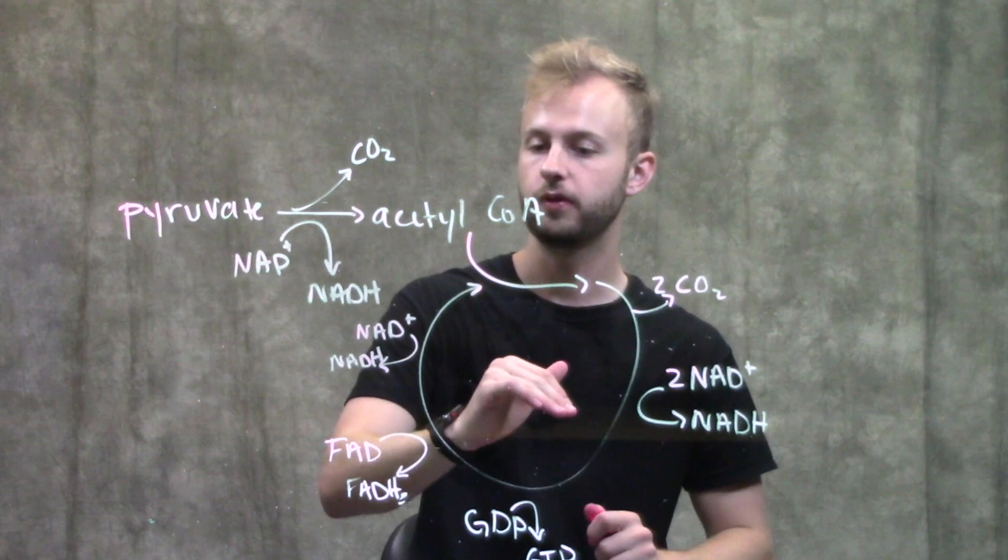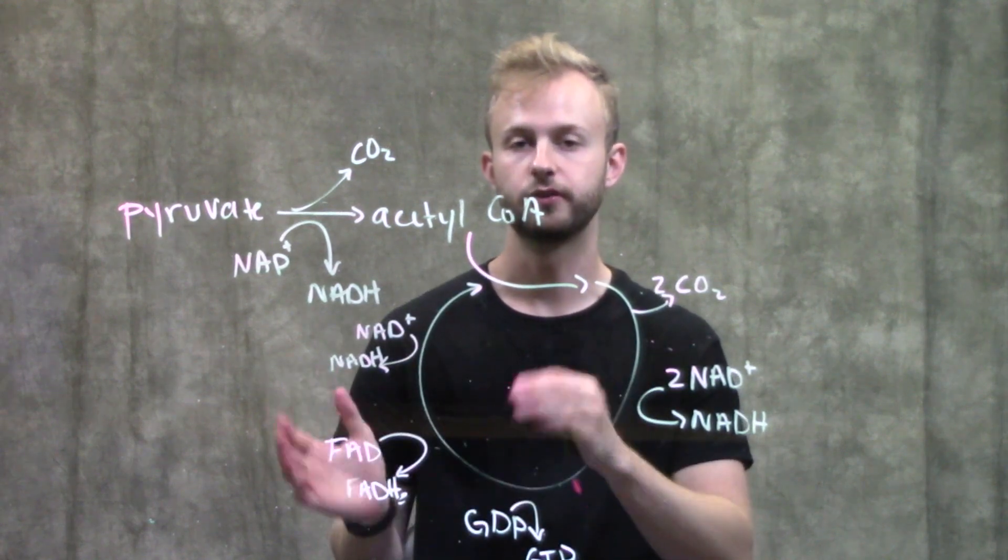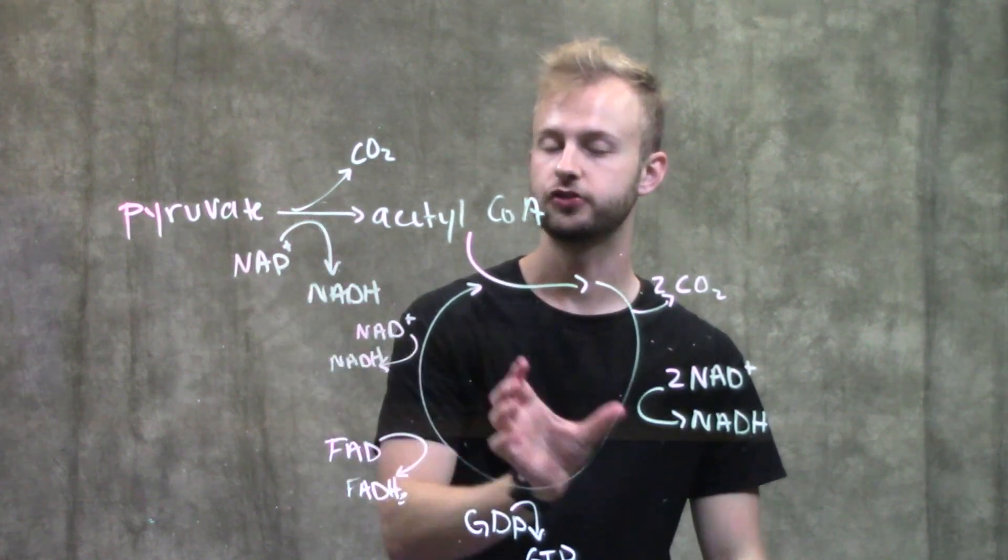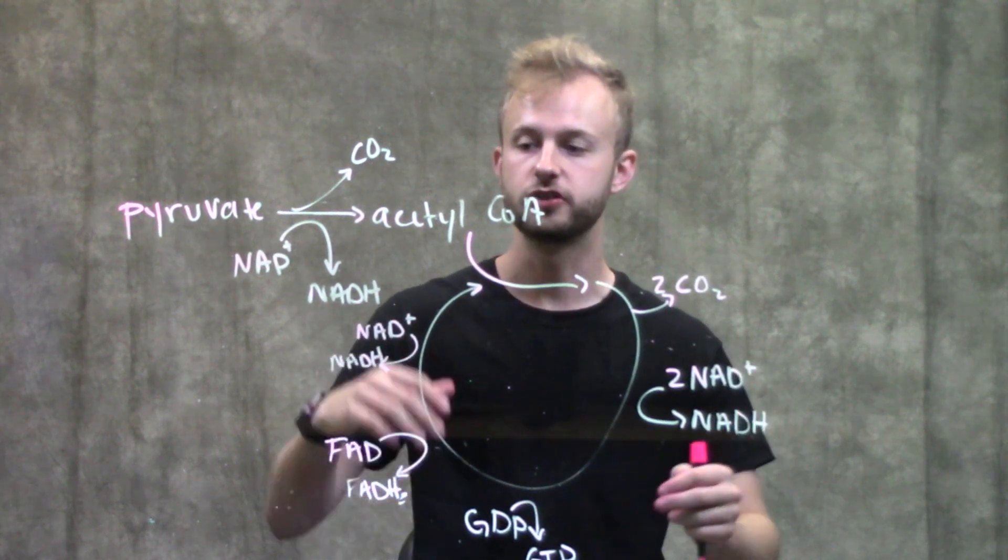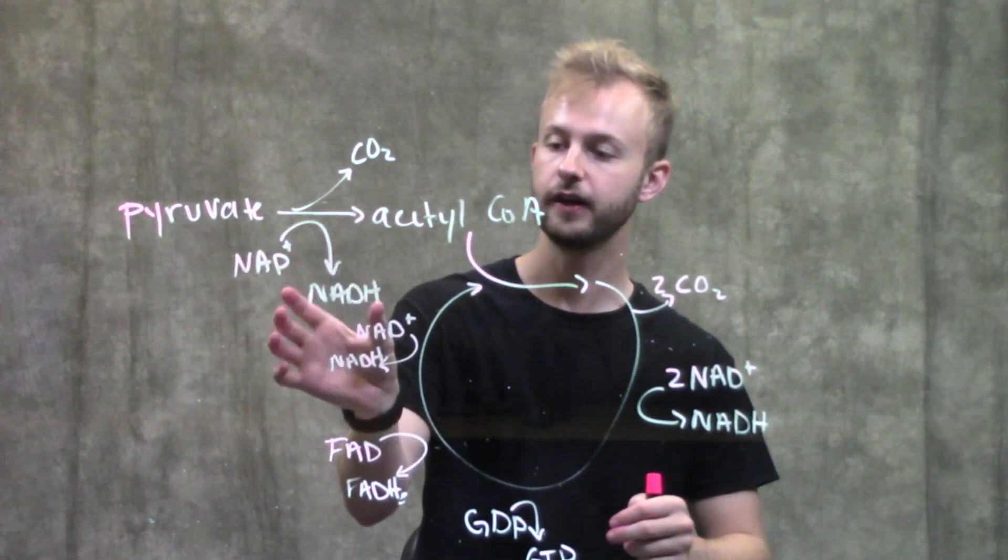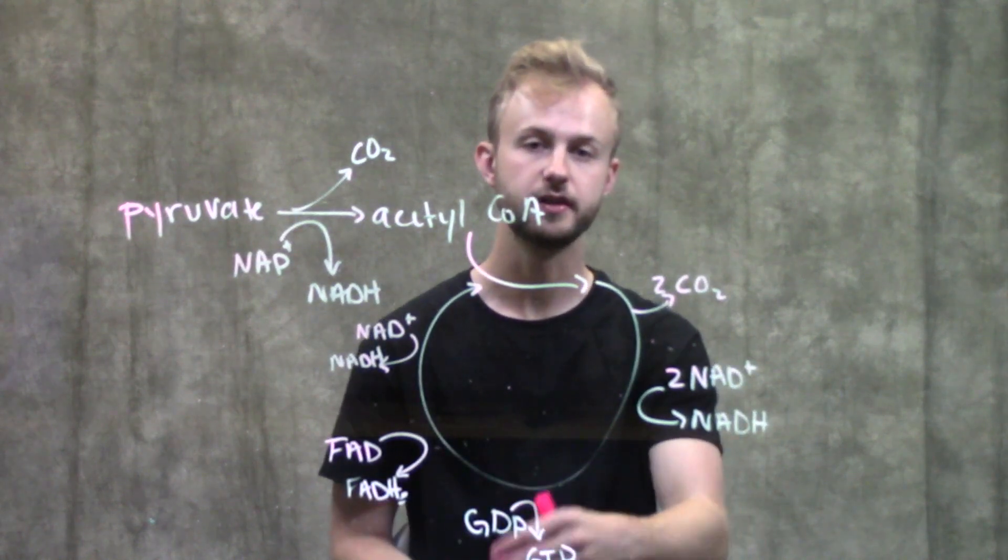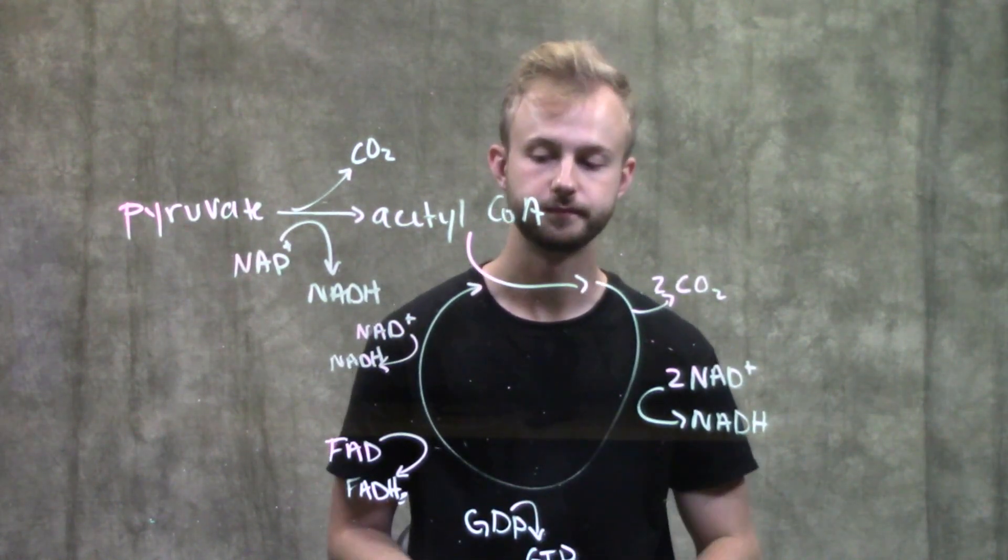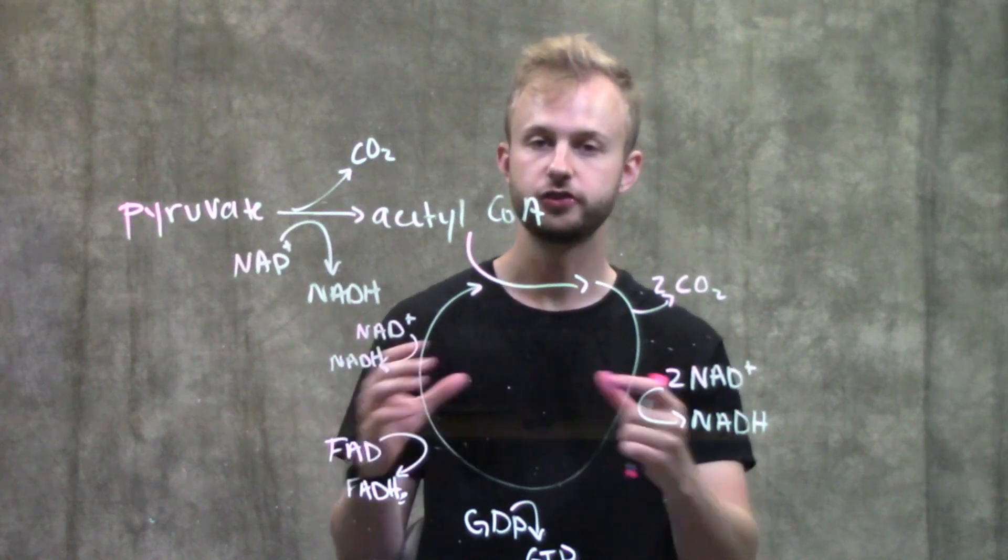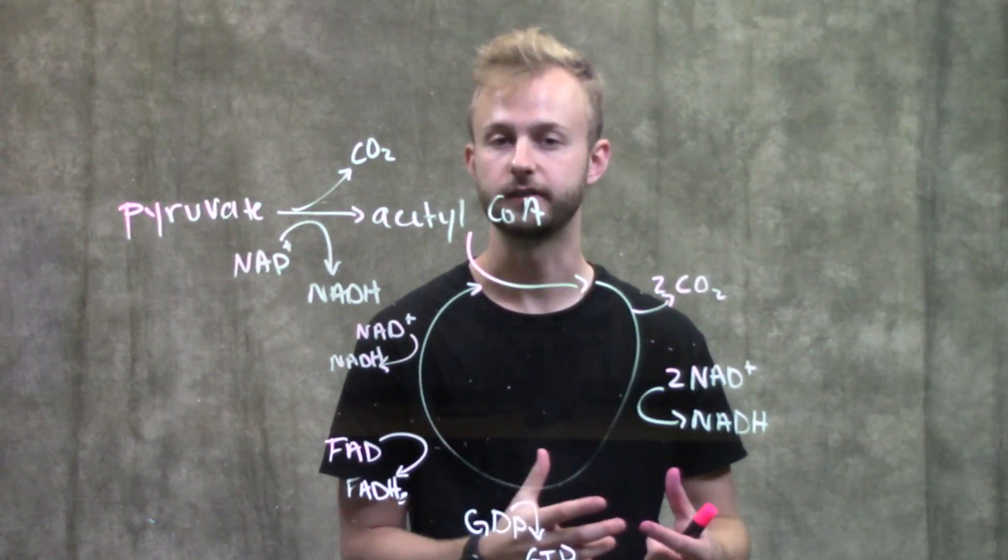So throughout this whole process of oxidizing glucose into different forms, we've been extracting this energy. And so the way that we're storing this energy is we're storing it in the form of electrons in NADHs and FADH2s or a GTP in the citric acid cycle. And so now we have this energy stored away in these molecules, but now we need to get it back out so we can use it.